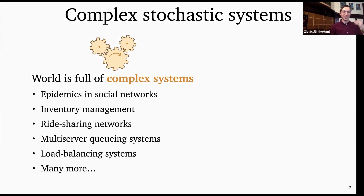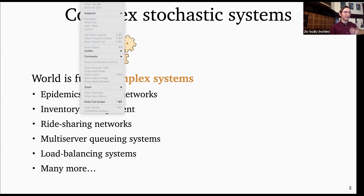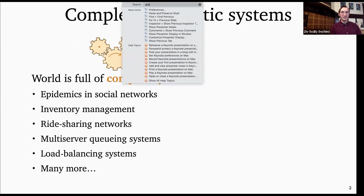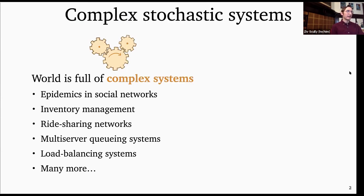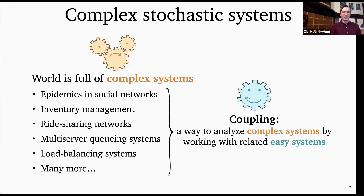Whether you're talking about epidemics or inventory management, ride-sharing, or queuing systems of various types, all of these are complex systems that are really difficult to analyze exactly mathematically. What I'm going to tell you about today is a way of analyzing a variety of complex systems by attacking a much easier system instead, and we're going to call this general way of thinking about complex systems coupling — a way to analyze complex systems by working with related easy systems.